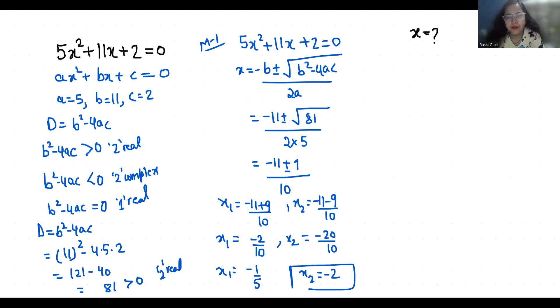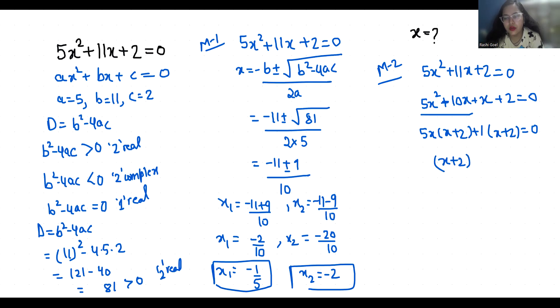Now method 2. I am going to use middle term split method and write 11x as 10x + x, so 5x² + 10x + x + 2 = 0. From the first 2 terms, if 5x is common, we get 5x(x + 2). If 1 is common from the next 2 terms, we get 1(x + 2). Now x + 2 is common, so (5x + 1)(x + 2) = 0.